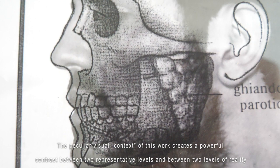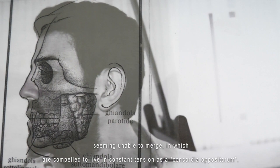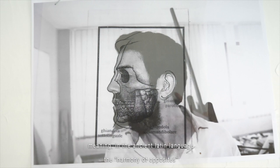The peculiar visual context of this work creates a powerful contrast between two representative levels and between two levels of reality, seeming unable to merge, which are compelled to live in a constant tension — as a concordia oppositorum, meaning in the ancient Latin language the harmony of opposites.